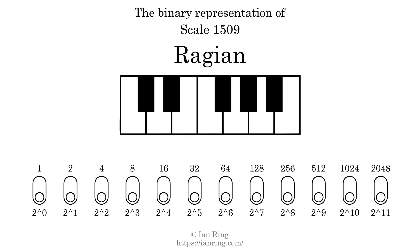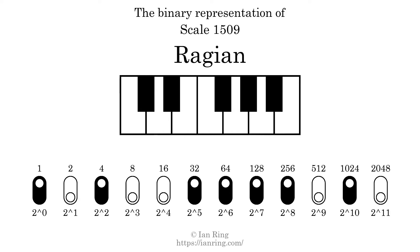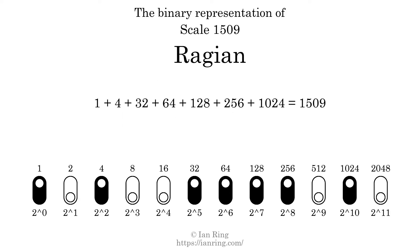The binary representation of this scale is determined by mapping tones of the scale to binary digits. Each binary digit represents a power of 2. To get the scale number, we add the powers of 2 together. The powers of 2 that are present in the scale, all added together, equals 1509.